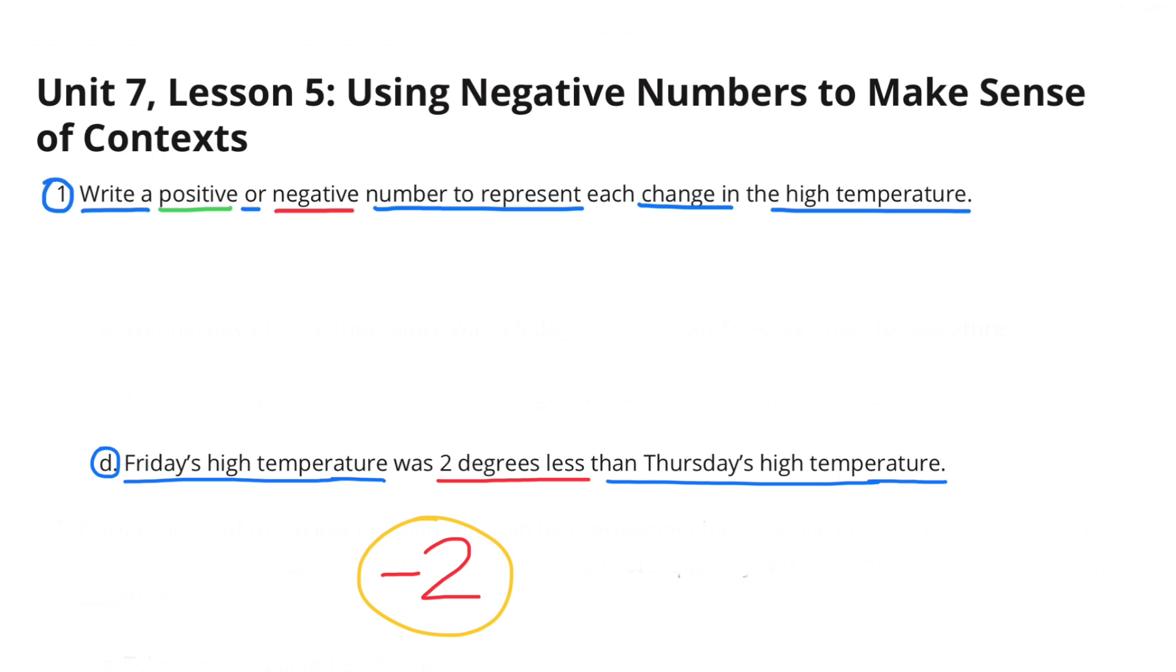D. Friday's high temperature was 2 degrees less than Thursday's high temperature. That would be negative 2.